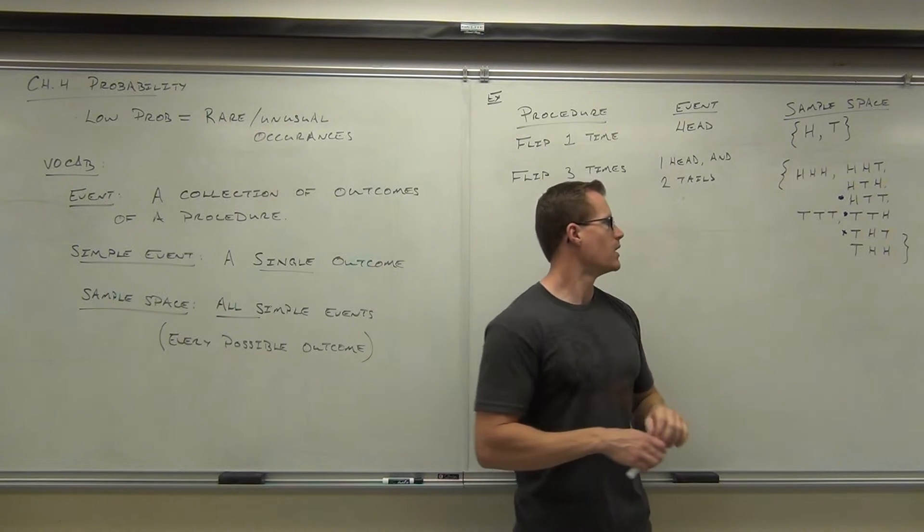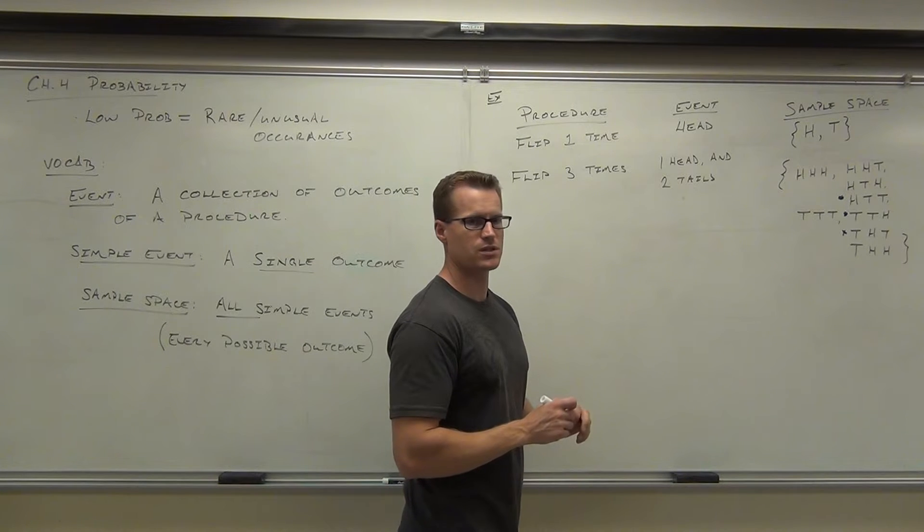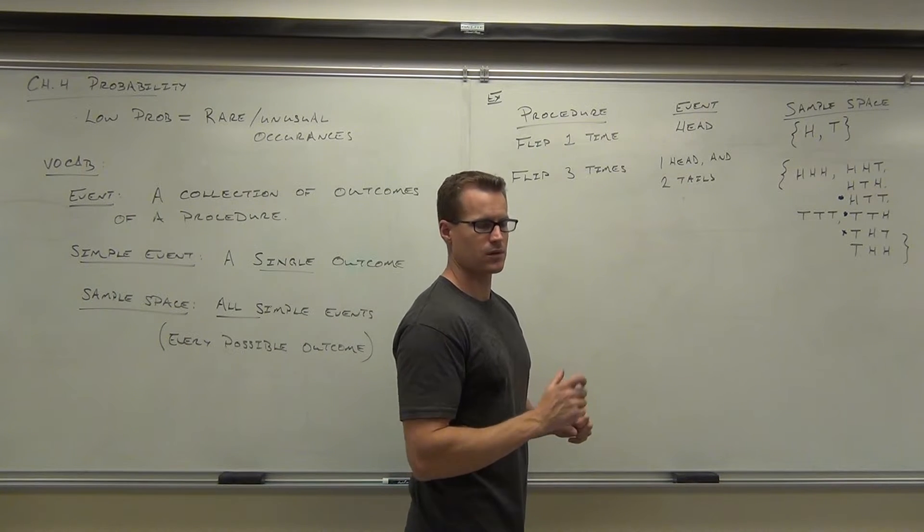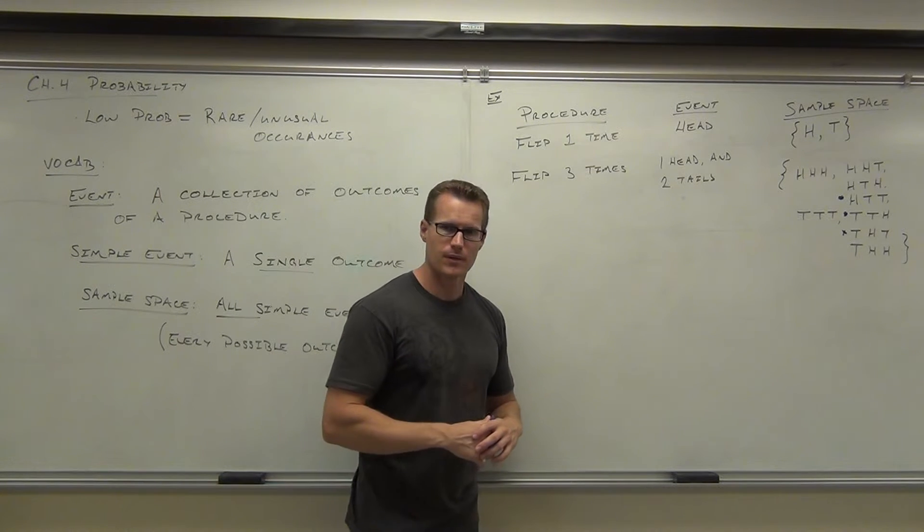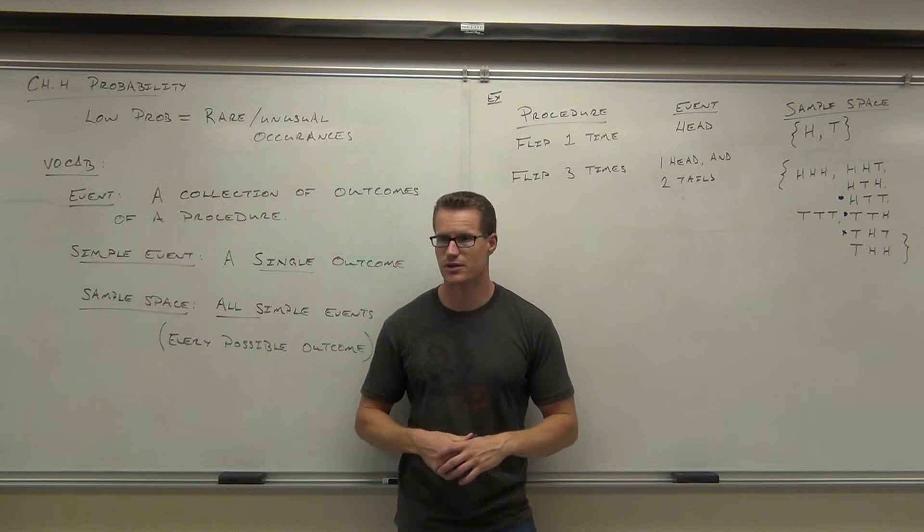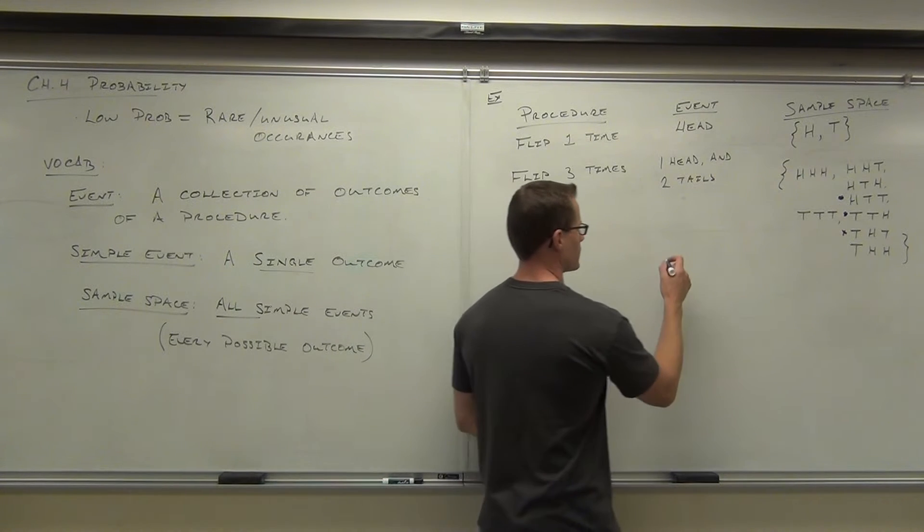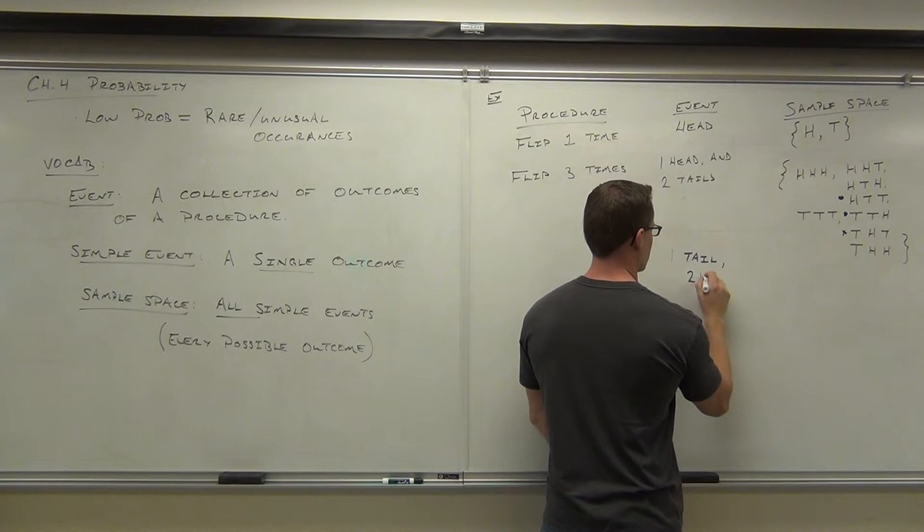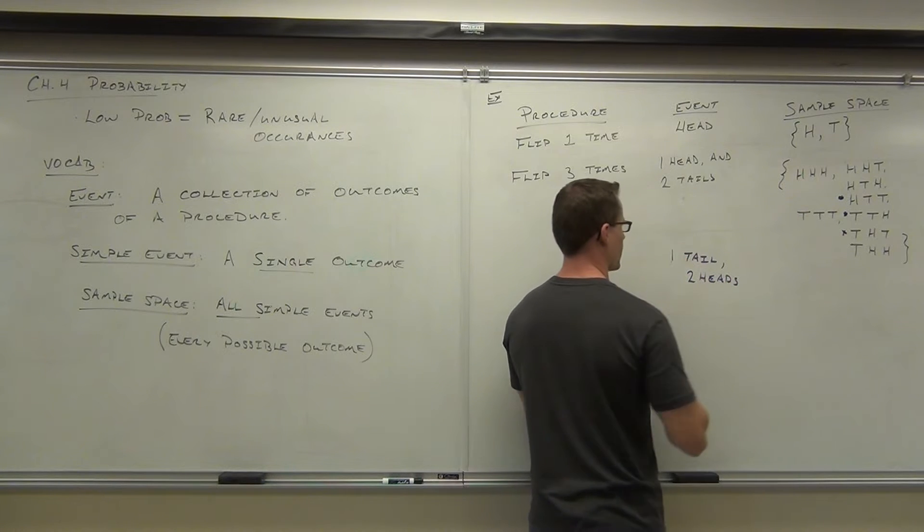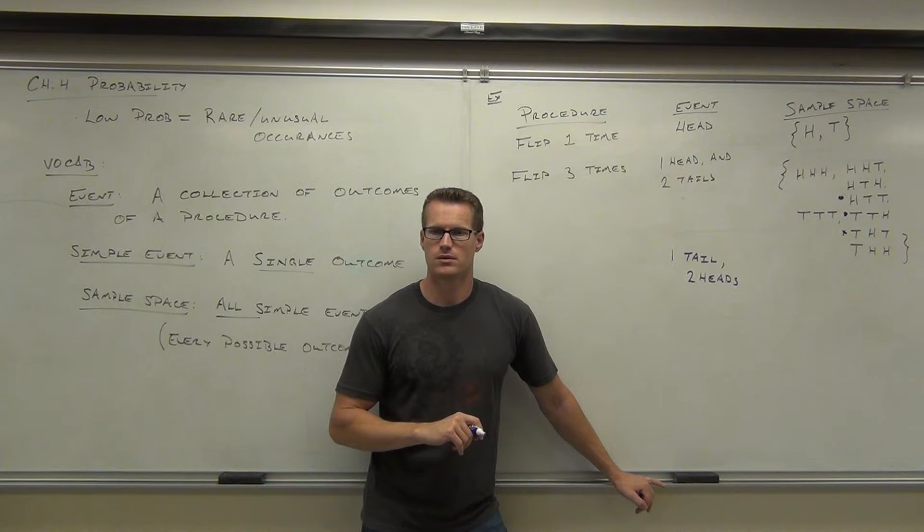Let's try one more. I want you to do it. Give me another event that I could have with flipping a coin three times. What's another event? What could happen? Can anything else happen besides one head and two tails? Okay, give me one. What now? One tail. Yeah, that works. One tail, two heads. Okay, is there any other events that I could have? What's that? Three heads.